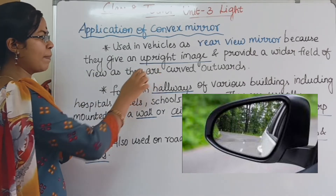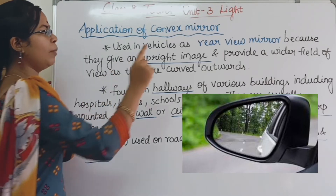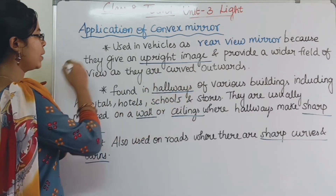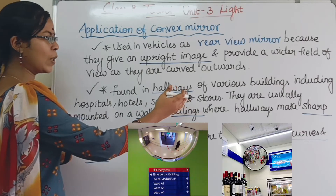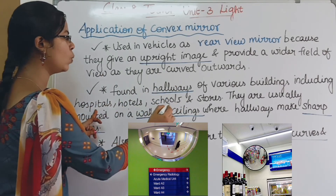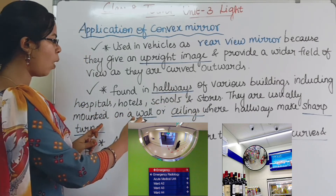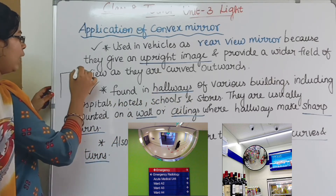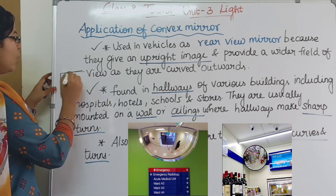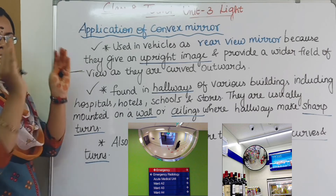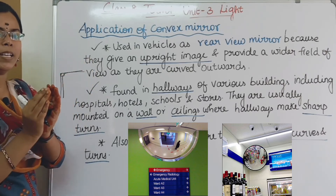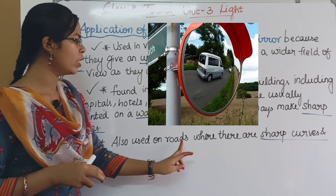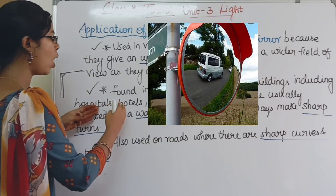Convex mirrors are also found in the hallways of various buildings, including hospitals, hotels, schools, and stores. They are usually mounted on a wall or ceiling where hallways make sharp turns. They provide a wider view, and are also used on roads that have sharp curves and turns.